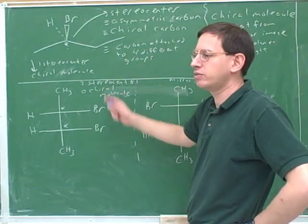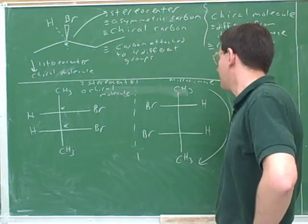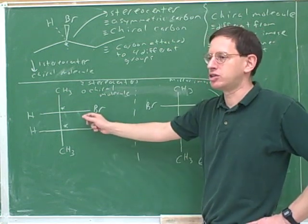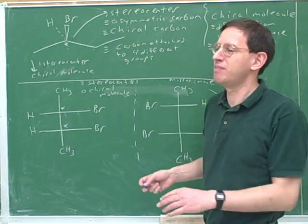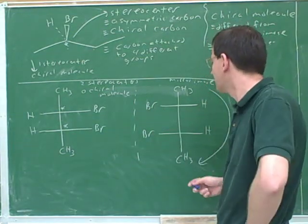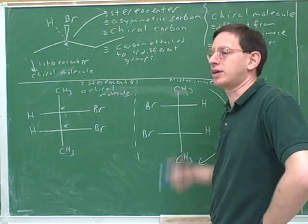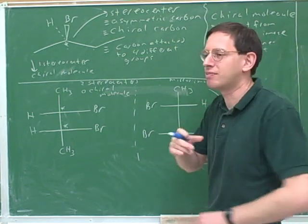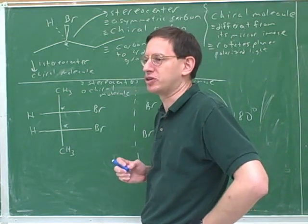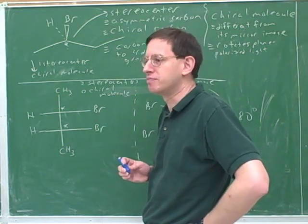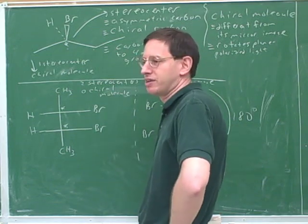How did you figure out that this was achiral? We wrote down the mirror image and then saw that we could rotate it and superimpose it on the original. However, the first time you tried that you got it wrong, and that's what happens to many students. Many students are not very good at superimposing mirror images, so it's good to have a shortcut. The trick is: if there is a plane of symmetry, then you know the molecule is achiral, and that's much easier in most cases than actually writing down the mirror image.